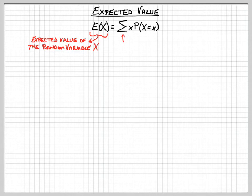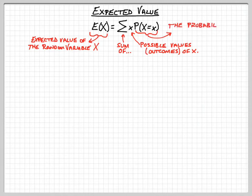Continuing to break this down, we know that sigma means the sum of something, so we're going to add together a bunch of things here. The little x is the possible values or the possible outcomes of our random variable X. And then P(X=x), that's basically the probability of getting the value of little x for the random variable big X.